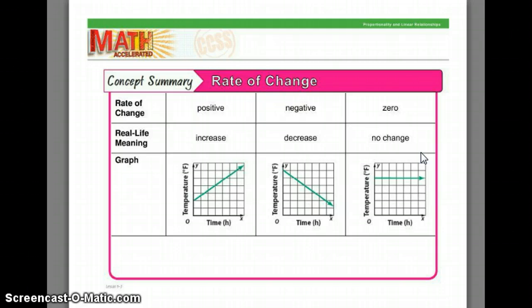Just a really quick overview: rate of change can be positive, negative, or zero, meaning no change. When we talk about a positive rate of change, we're talking about an increase. A negative rate of change is a decrease, and zero change means no change.